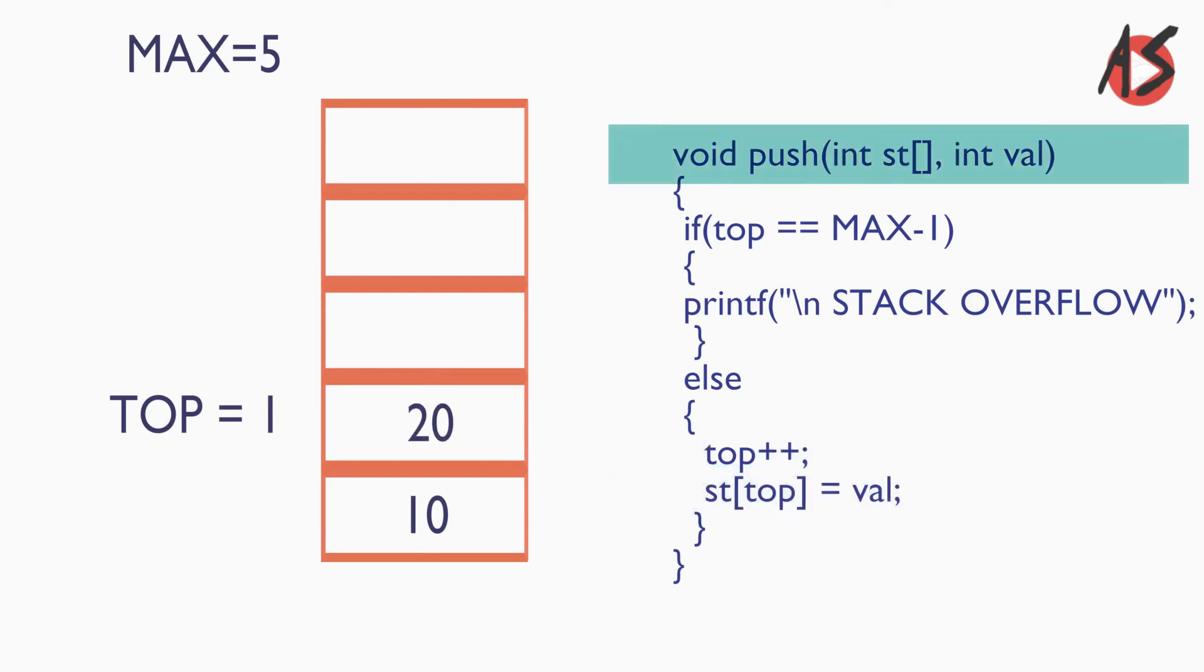Similarly we add 30 in the second place of the stack, top will be incremented to 2. Similarly we add 40 in the third place of the stack, top will be incremented to 3.